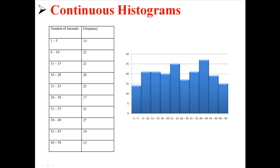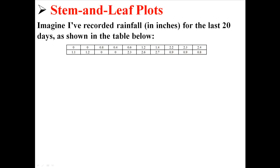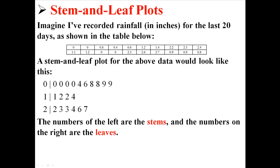Now, there's also another way of displaying this type of data, which is a stem and leaf plot. Imagine I've recorded the rainfall in inches for the last 20 days, as shown in the table below. A stem and leaf plot for the above data would look like this, where the numbers on the left are the stems and the number on the right are the leaves.